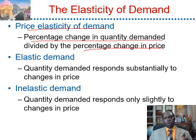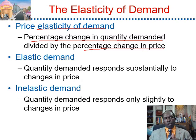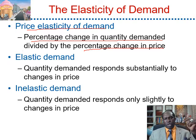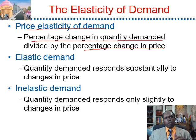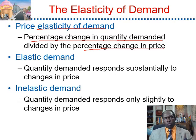Usually it should be negative 2, but we drop the minus sign and focus only on the absolute value of the elasticity. We know that by the law of demand, increasing the price will lead to a decrease in the quantity demanded, so we focus only on the absolute value. This means that a 1% increase in the price of ice cream will lead to a 2% decrease in the quantity demanded of ice cream.